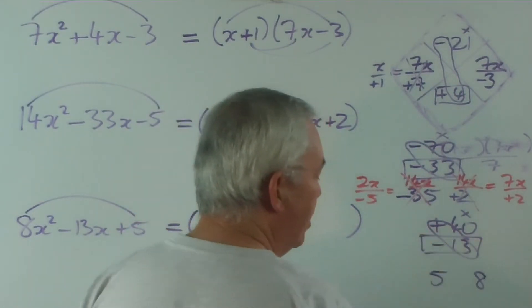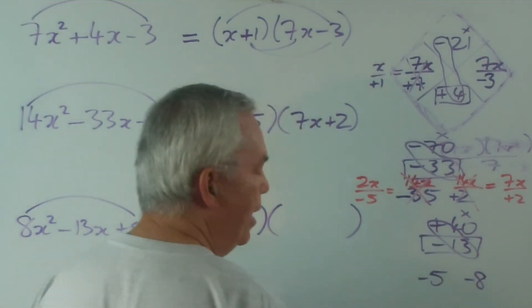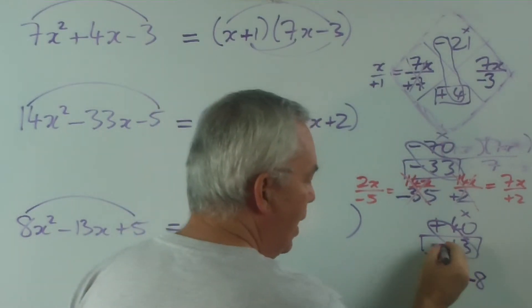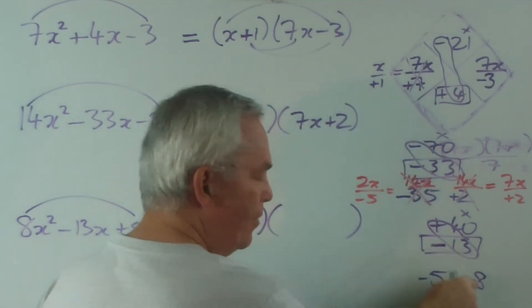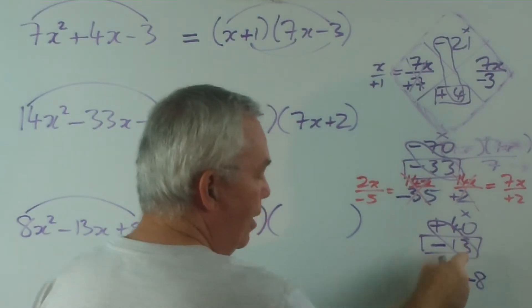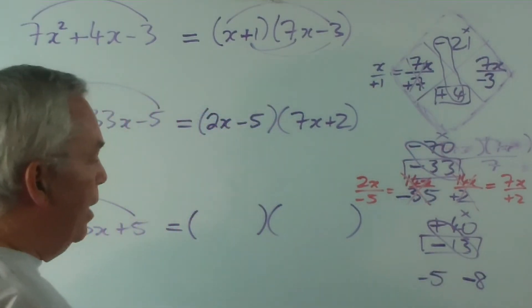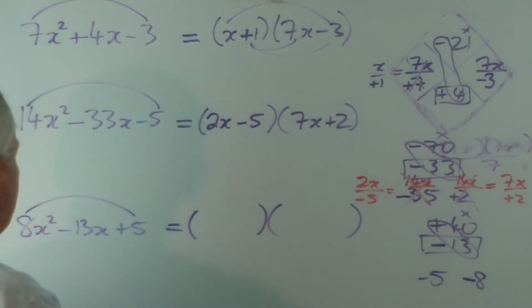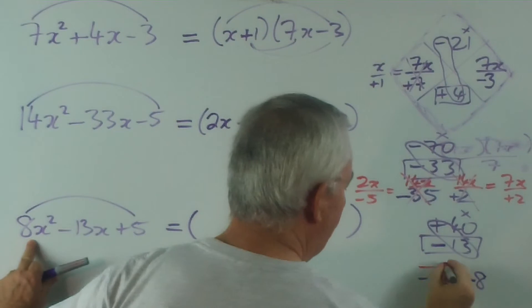To get -13, they'd both be negative. Certainly the big number has to be negative. It always has to have the same sign. And starting at -8, we go down another 5 to get there. And all that remains now is for us to choose 8x and write that on top.